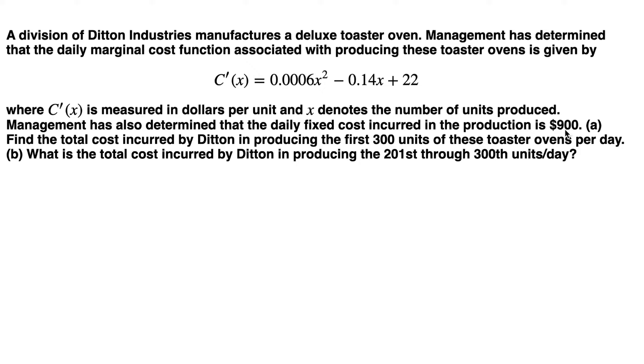Here is the fixed cost, that's $900. So after we integrate, the constant we put is $900. This is variable cost and here is the fixed cost. If we add them we get the total cost. Then we need to figure out two parts, a and b. Find the total cost incurred in producing the first 300 units. In part b, producing 201st through 300th units. Pretty much 100 units, but starting 201st and ending 300th.